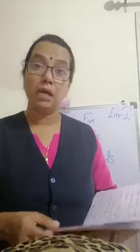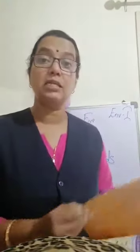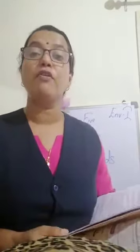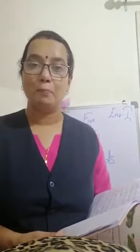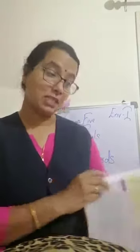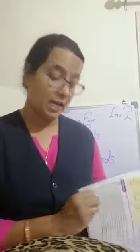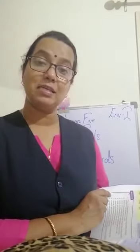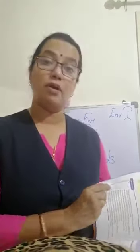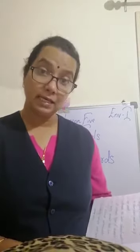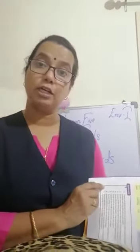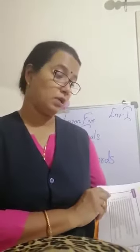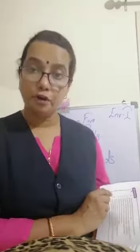Then comes cub, C-U-B — it is a baby of lion. Then it is pup, P-U-P — it is a baby of dog. Then comes kitten, K-I-T-T-E-N — it is a baby of cat. And then it is chick, C-H-I-C-K — it is a baby of crow. And then duckling, D-U-C-K-L-I-N-G — it is a baby of a duck. And then foal is a baby of donkey.